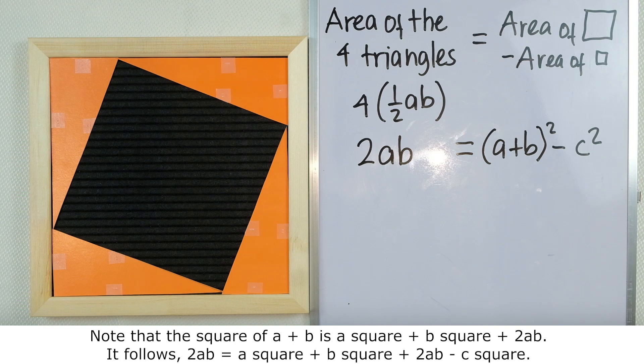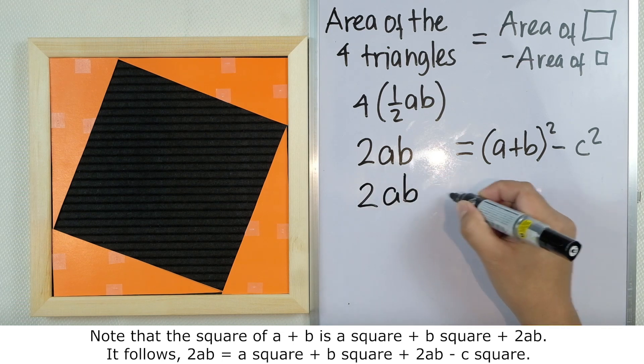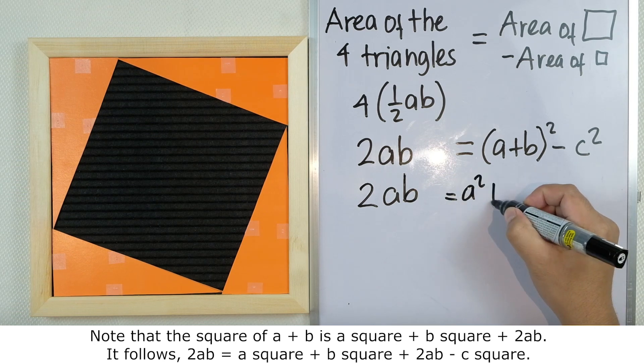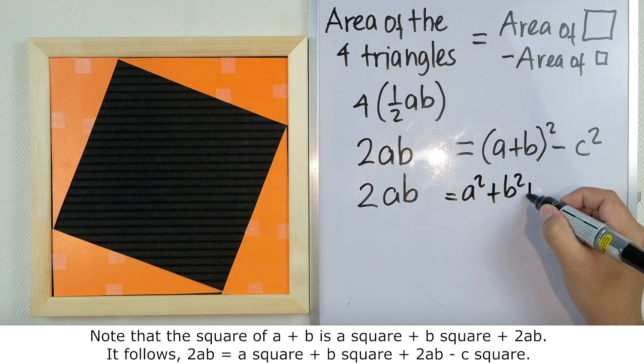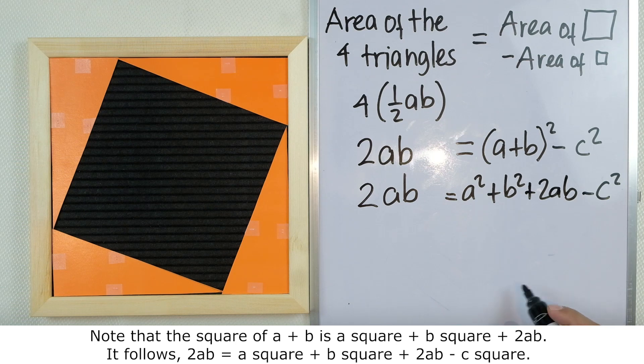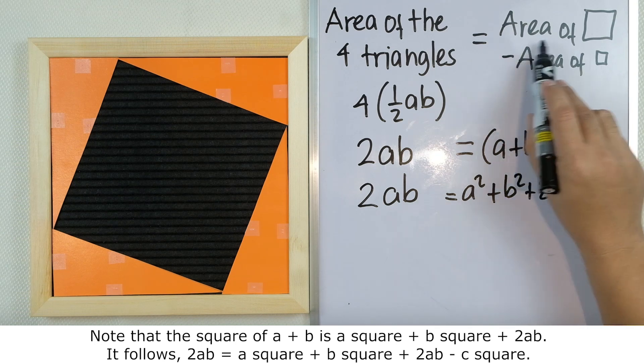It follows then that 2ab = a² + b² + 2ab - c², wherein a² + b² + 2ab is the area of the big square.